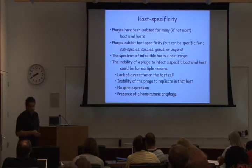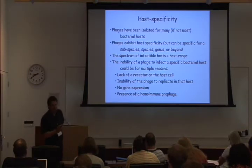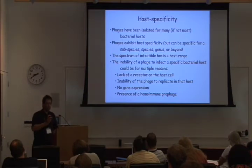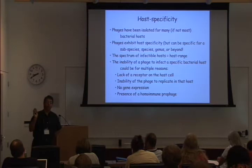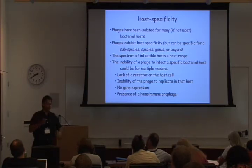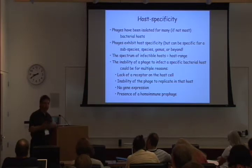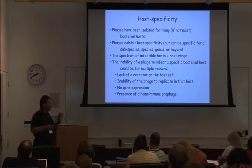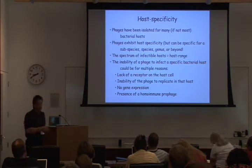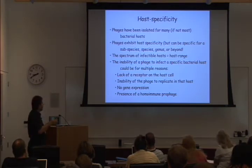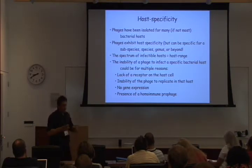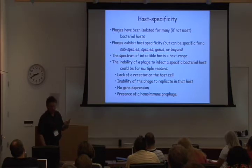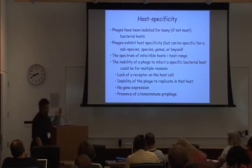Phages are typically quite specific for their bacterial hosts. E. coli phages, none that I'm aware of, are able to infect Bacillus, for example. There are phages that will infect all sorts of different types of E. coli, and phages that may infect both E. coli and Salmonella, so there's a variety of infectious patterns, but there is this notion of specificity. The spectrum of hosts that can be infected is typically referred to as the host range, and different bacteriophages have different host ranges — you can think of these as overlapping sets of host preferences.